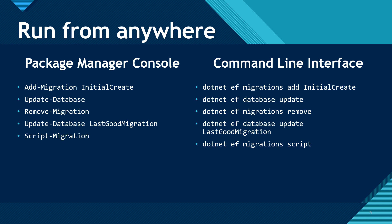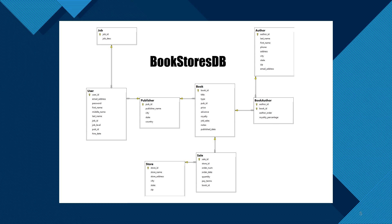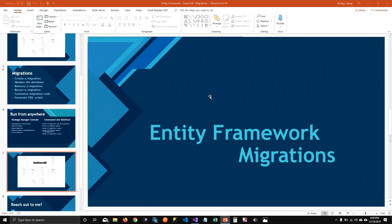Alright, so what are we going to do today? In my last episode, I created the publisher table. In this demo, I'm going to create a book table. I'm going to make some mistakes so that I can show you how you can use remove migration and revert migration commands — so you can see how that's helpful. Let's jump into the demo.